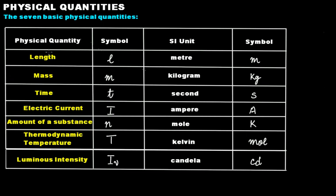These are the symbols of the respective physical quantities. For example, lowercase l is the symbol for length, m is for mass, t for time, uppercase I for electric current, lowercase n is amount of a substance, capital T for thermodynamic temperature, and nu (ν) is for luminous intensity.